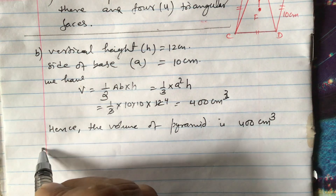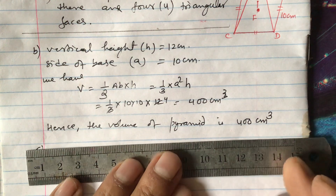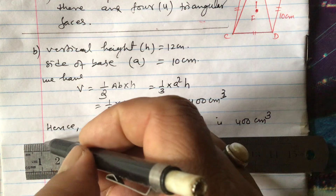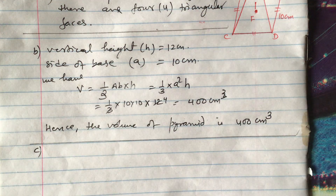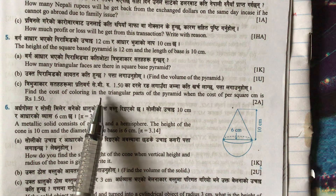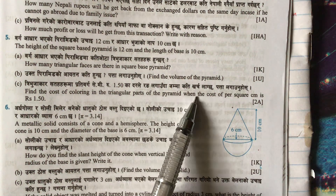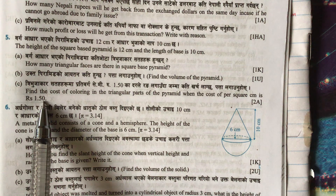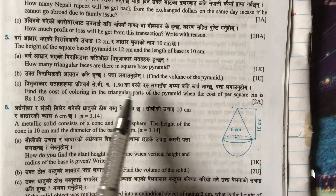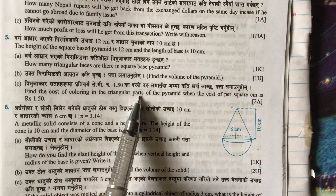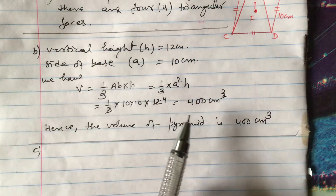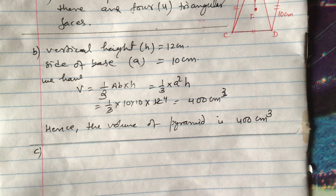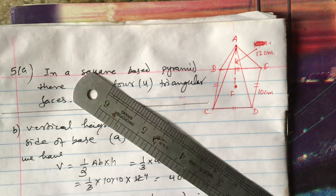Now draw a line and begin answering part c. In question c, we are asked to find the cost of coloring the triangular parts of the pyramid when the cost per square centimeter is 1.50 rupees. To find the cost of coloring the triangular faces, we first need to find the slant height.